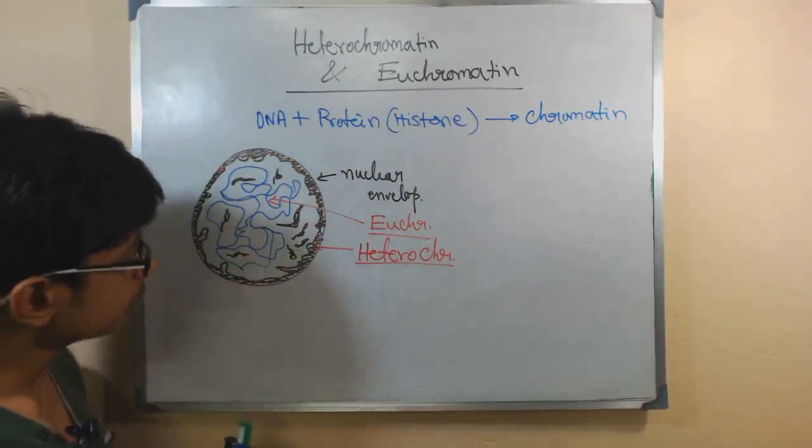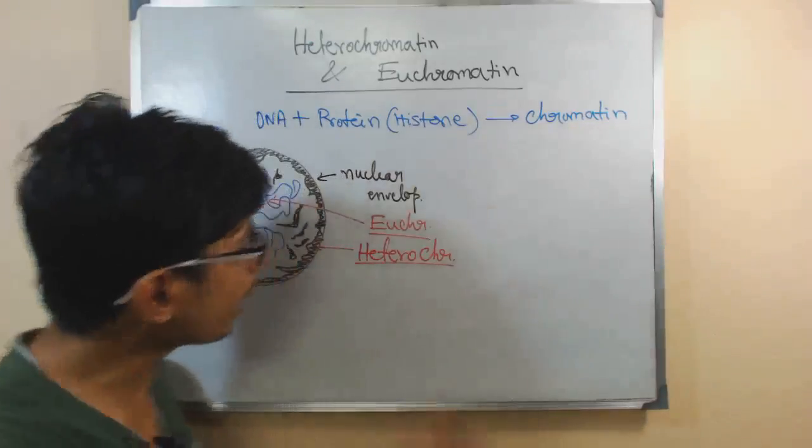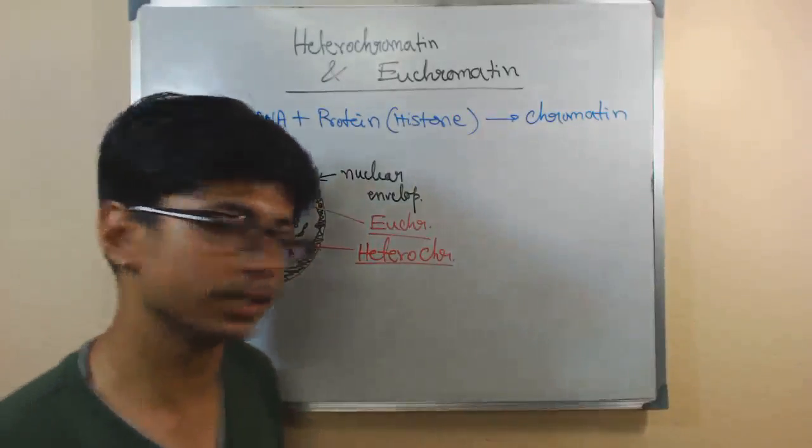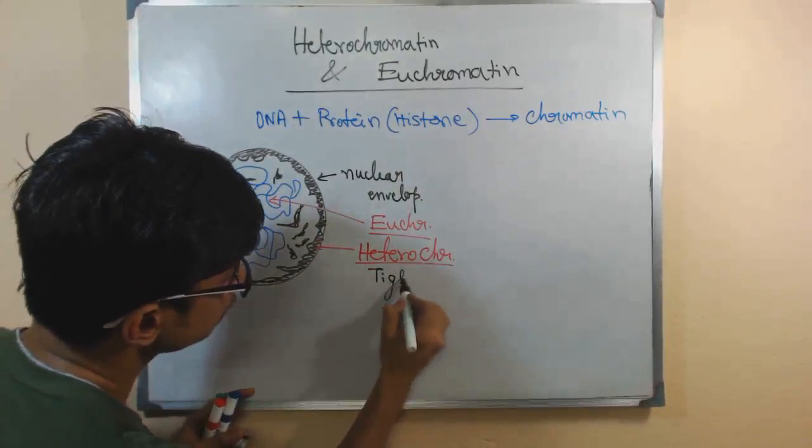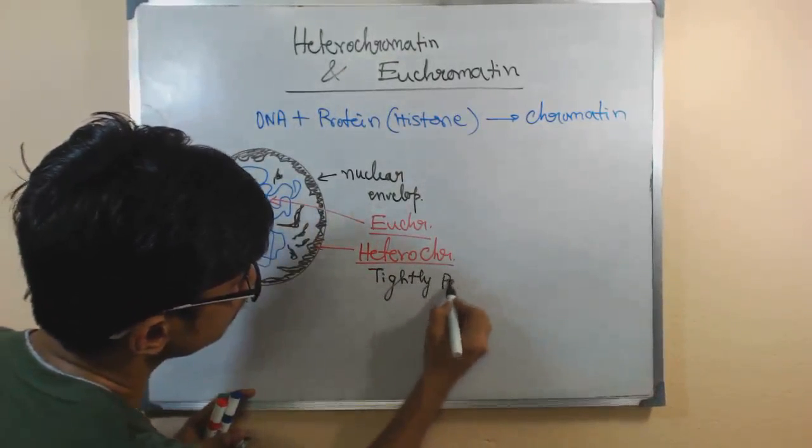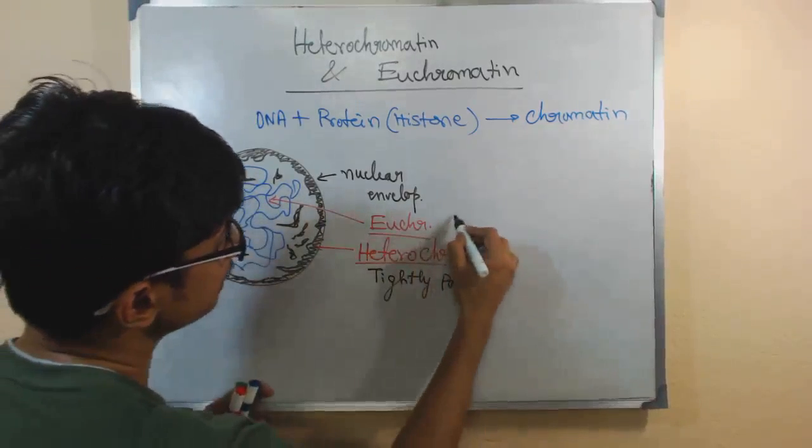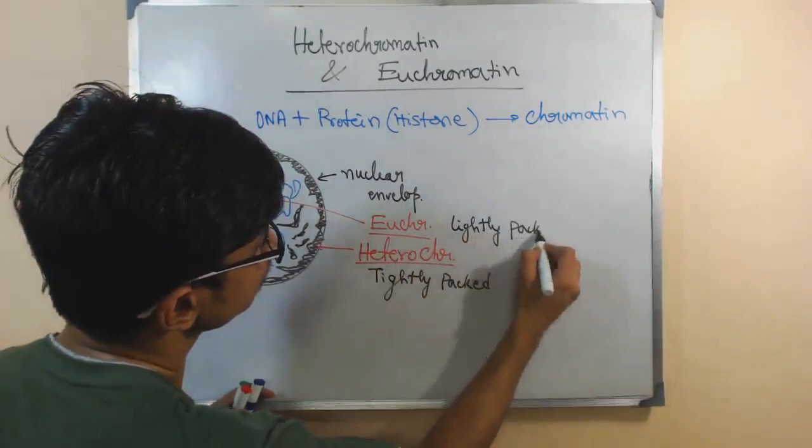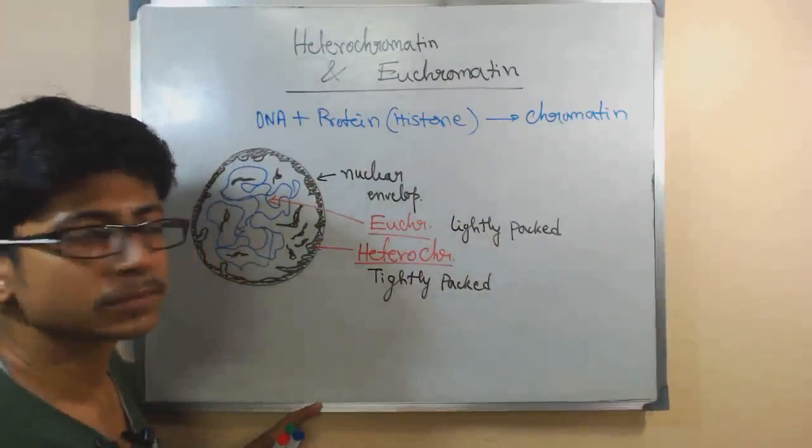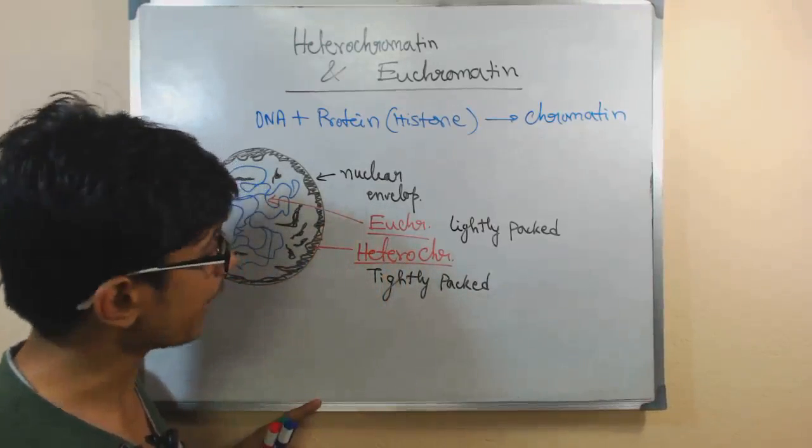Now, why is this Heterochromatin darker stained? Why is Euchromatin lightly stained? Euchromatin is lightly packed. Heterochromatin is very, very tightly packed.